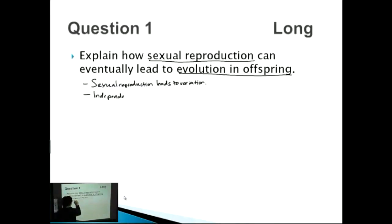If you're unsure what independent assortment is: during metaphase one you have the lining up of homologous chromosomes. They randomly line up - there's a 50% chance they line up on the left hand side and a 50% chance that they line up on the right hand side.